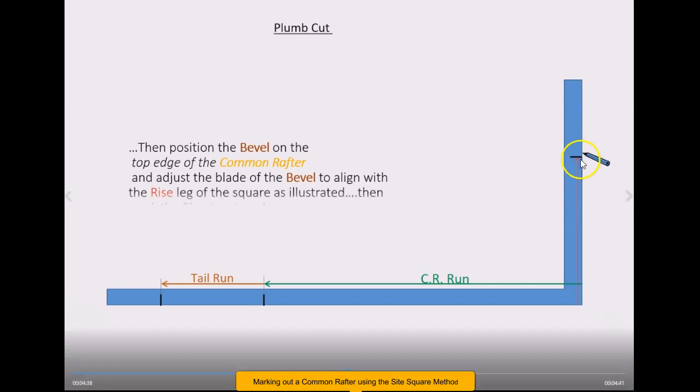This relates to the cuts then on your rafter. Your plumb cut will be at the top abutting up by the ridge board. Currently where I'm clicking on here, that line represents the center of your ridge board, so later on towards the end you'll have to take away half the ridge board after you've marked the rafter.